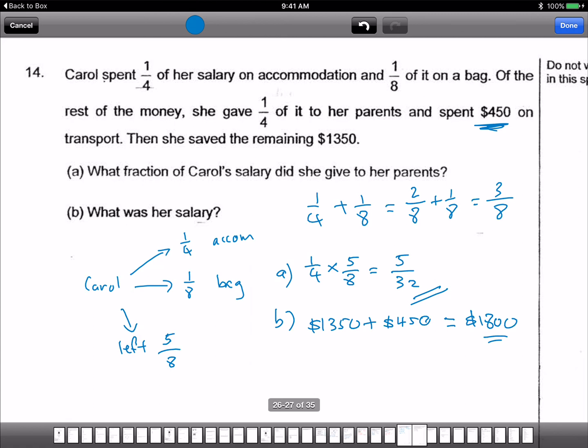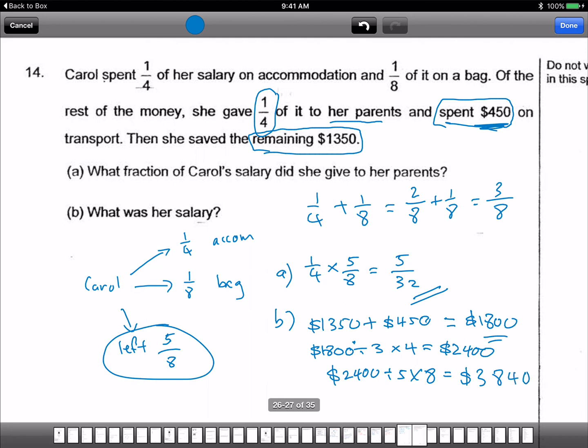Okay, now what is this $1,800? It's three quarters. You see, one quarter gave to parent, spent this, and saved the remaining. So $1,800 is actually three quarters of the amount that's left. So we take $1,800 divided by three then times four, which is equal to $2,400. Now this $2,400 is equivalent to what's left. So if you want to find her total salary, we have to take $2,400 divided by five multiplied by eight, which will give us $3,840.